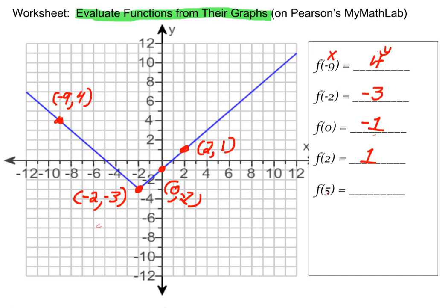And finally, f of 5. We need to find its y-coordinate, which is called a function value. There's 5 on the x-axis, going up to the graph and going over to the y-axis, finding out y equals 4. So when x is 5, y equals 4. We have evaluated a function using its graph.